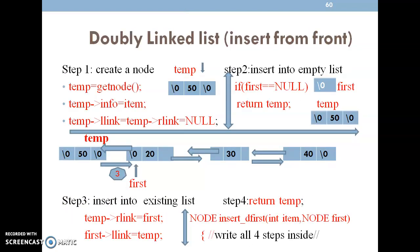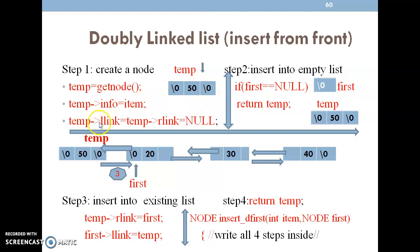Inserting a node from the front end: Step 1 — create a node. Whenever we call the get node function, the node gets created. We give the name 'temp' to this node. Then temp pointer info is assigned the item we are going to insert — here we are inserting 50. Then temp pointer left link and right link are both set to null, because as of now we have only one node.